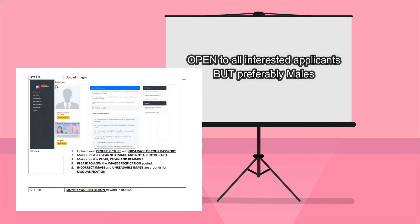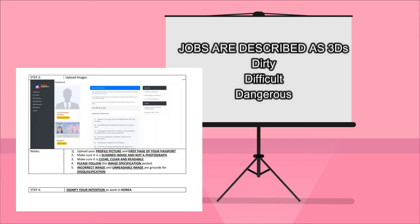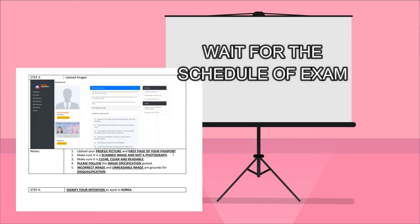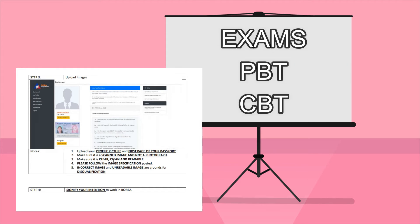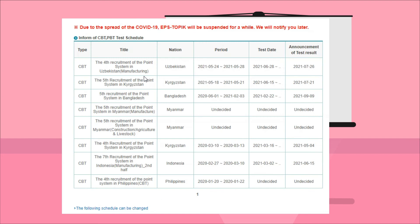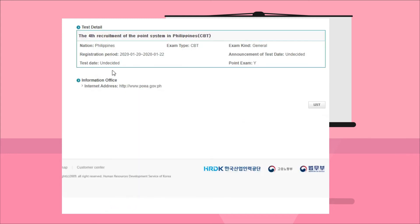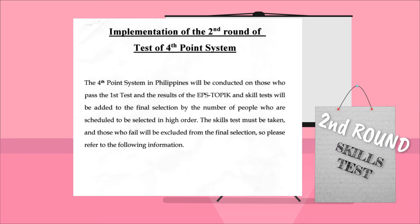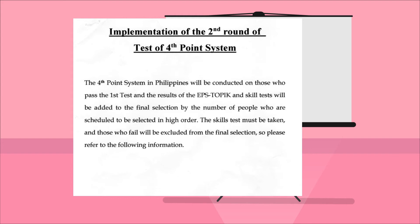If you have successfully registered, wait for the schedule of the exam. The exams are either PBT — Paper Based Test — or CBT — Computer Based Test. The announcement will be very specific on the test date, time, and location. After successfully passing the Korean language test, successful applicants will continue to the next step by taking another test, which is the skills test. Please check the video description for more detailed information about the skills test.